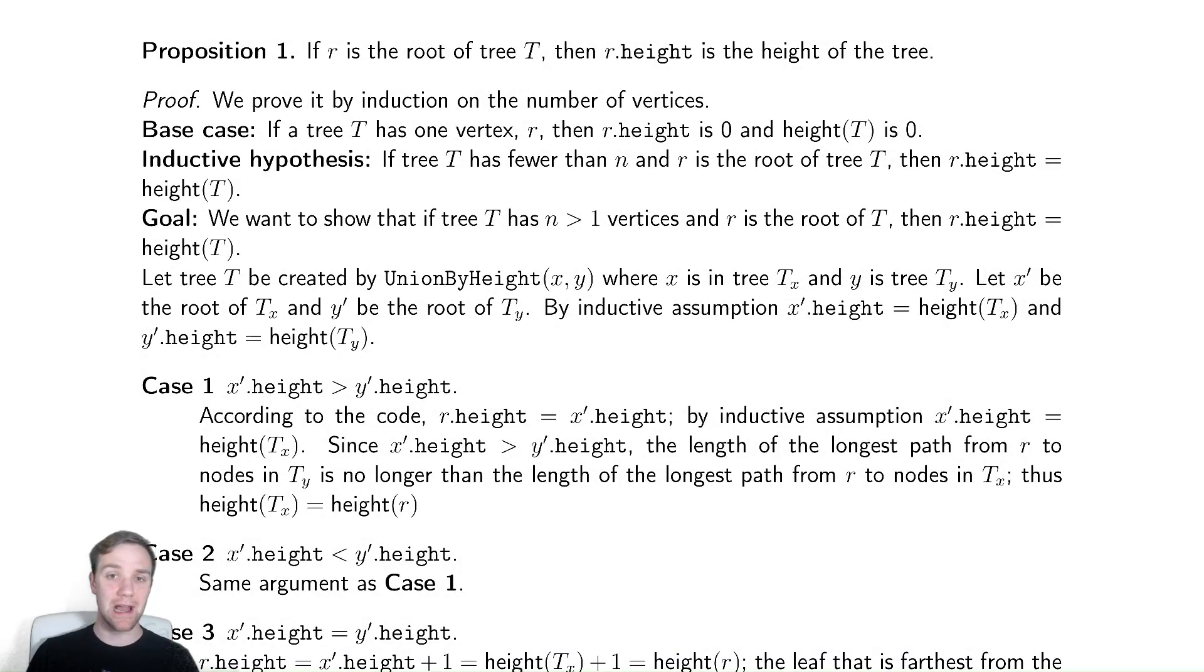Similar to what we saw in our analysis of shortest path trees, we're going to want to verify that the quantity we have in our code, the dot height field, is actually the quantity that is what we're claiming it is.